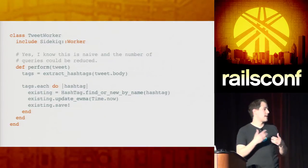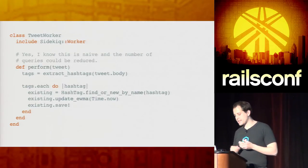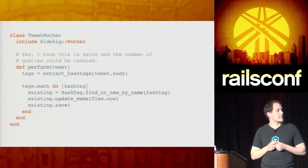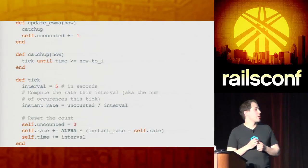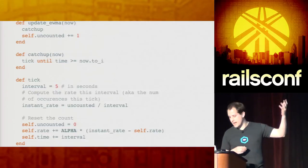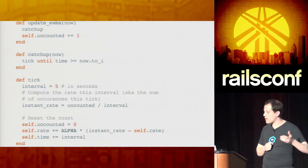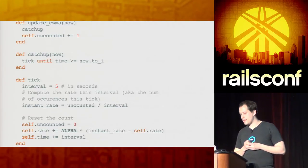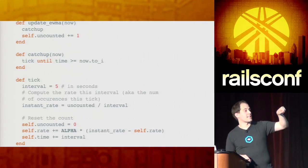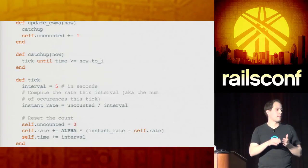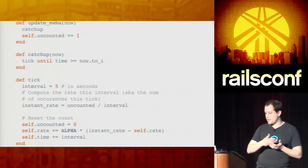The basic premise is you have an entry method which takes in a tweet as an argument. The first step is to extract the hashtags from the body, getting an array of tags. Then loop over each tag, read from the database for an existing record, and if so, update the moving average for it and save it back. The most important part to call attention to is that in the update EWMA, the very first thing we do is catch up — it will keep ticking to update the rate for every bucket, every five seconds, so it will down-weight previous values.